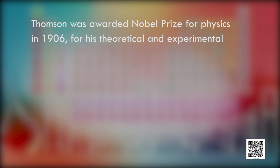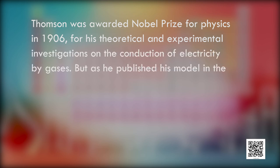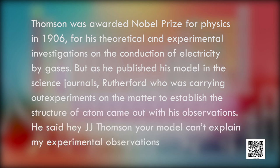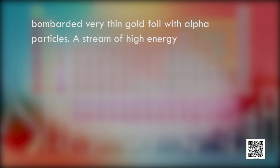As Thomson published his model, Rutherford — who was carrying out his own experiments on the structure of the atom — said that Thomson's model could not explain his experimental observations. Rutherford and his students bombarded a very thin gold foil with alpha particles — a stream of high-energy particles from a radioactive source — directed at the foil of approximate thickness of 100 nanometers. The thin gold foil had a circular fluorescent zinc sulfide screen around it. Whenever alpha particles struck the screen, a tiny flash of light was produced at that point.